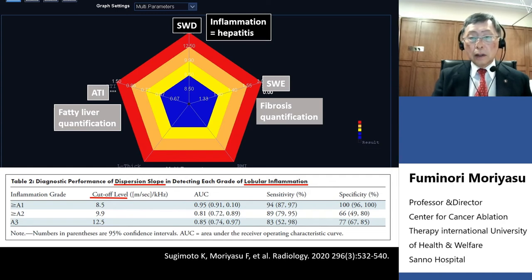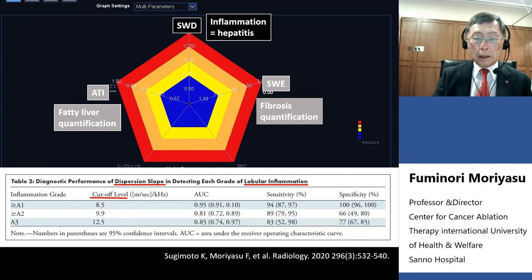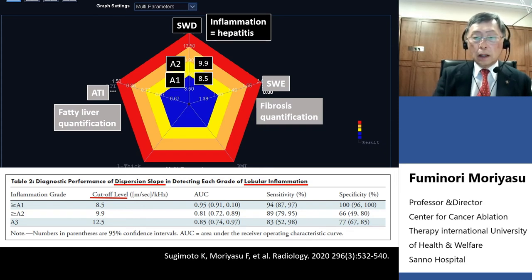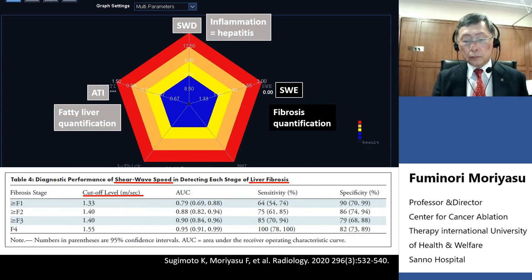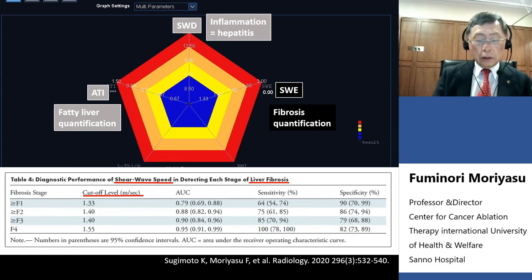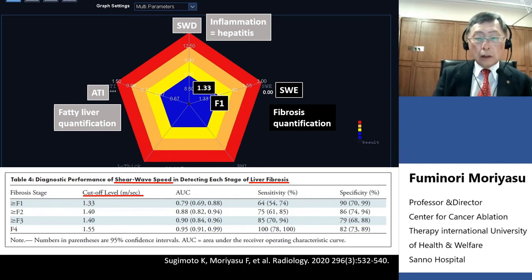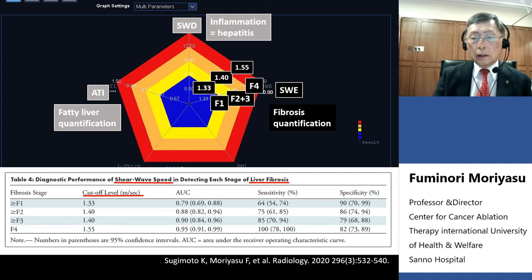The second axis is the shear wave dispersion data, representing inflammation — chronic hepatitis activity. The cut-off levels are indicated as A1 (activity 1), A2, and A3. Finally, shear wave elastography — the shear wave propagation speed — also has cut-off values indicated on the radar chart: F1, F2, F3, and F4 for fibrosis staging.